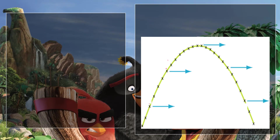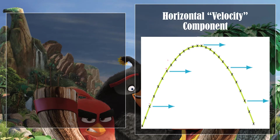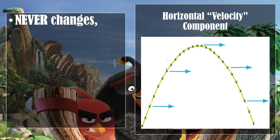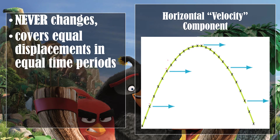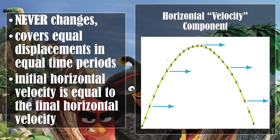We have the horizontal velocity component. The horizontal velocity component never changes — it covers equal displacements in equal time periods. The initial horizontal velocity is equal to the final horizontal velocity. In other words, the horizontal velocity is constant, because gravity does not work horizontally to increase or decrease the velocity.